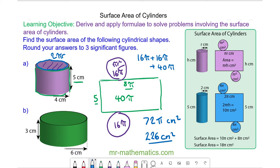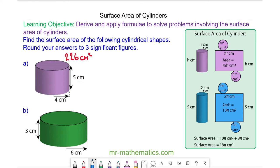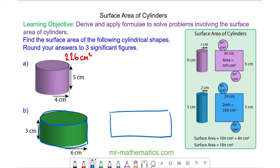Let's try question B. To begin with, we can unravel the curved face to make a rectangle. The length of the curved face is formed by the circumference of the circle, which is 2πr. The radius is given as 6, so 2 times π times 6 is 12π.